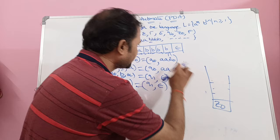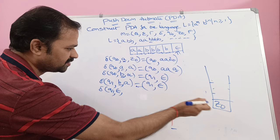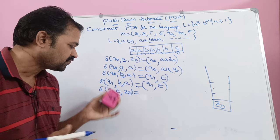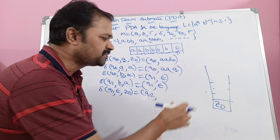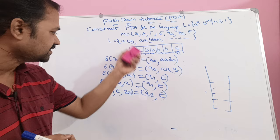Now we are at epsilon and the stack contains z naught. So δ(q1, epsilon, z naught): the input symbol is epsilon and the top of the stack is z naught, meaning the complete input string has been processed. We change the state from q1 to q2, where q2 is the final state, and pop the stack (epsilon). Now the stack doesn't contain any elements. These are the transition functions.